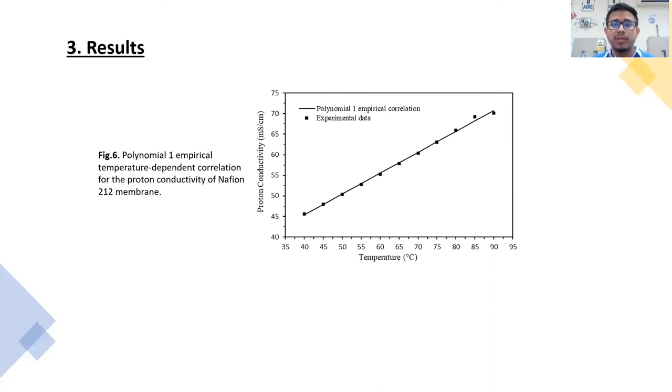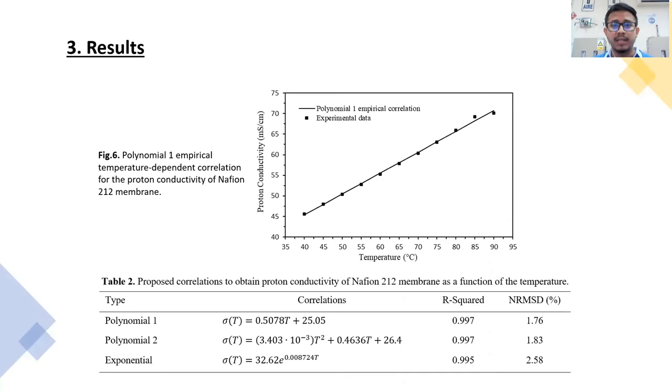To compute proton conductivity, a prediction correlation was proposed in table 2. The correlation presented with the respective R-square that explains how the dependent variable describes the independent variable. Further, normalized root-mean-square deviation is also added. It is an indicator of the percentage of errors associated with the proposed prediction model. The polynomial-1 correlation predicts in the best manner with an R-square of 0.997 and a normalized root-mean-square deviation of 1.76%. The values obtained from this correlation are shown as a continuous curve plotted with the experimental data in figure 7. Furthermore, this correlation can be used in future semi-empirical models.